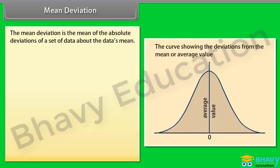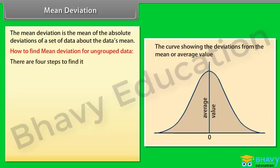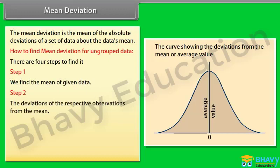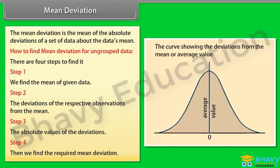Mean Deviation. The mean deviation is the mean of the absolute deviations of a set of data about the data's mean. To find mean deviation for ungrouped data, there are four steps: Step 1, find the mean of given data. Step 2, find the deviations of the respective observations from the mean. Step 3, find the absolute values of the deviations. Step 4, find the required mean deviation.